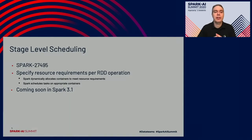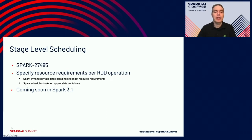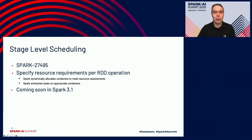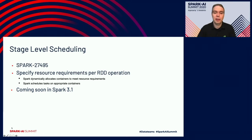Stage-level scheduling is designed to solve that problem, covered by Spark JIRA 27495. This allows users to specify resource requirements per RDD operation, meaning Spark can dynamically allocate containers to meet the resource requirements at particular stages — so you don't have to have a uniform task requirement for the whole application. This is coming soon in Spark 3.1; it just missed the Spark 3.0 cutoff but is almost complete and will be ready in Spark 3.1.